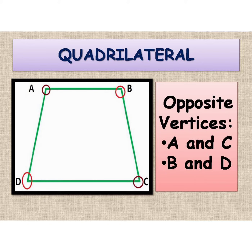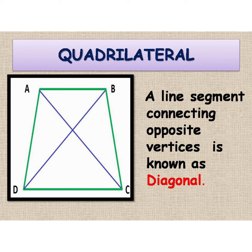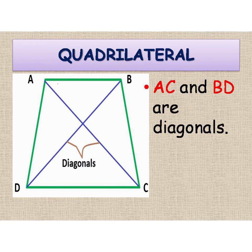In a quadrilateral we always find two pairs of opposite vertices. Now we can define diagonals. A line segment connecting opposite vertices is a diagonal. Line segment AC connects opposite vertices A and C, hence AC is a diagonal. Similarly, line segment BD connects vertices B and D. Here B and D are opposite vertices, hence BD is also a diagonal. So a quadrilateral has two diagonals.